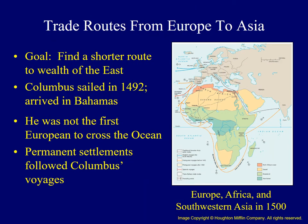Columbus was wrong when he believed he had found a quicker route to Asia, and he was not the first European to successfully cross the Atlantic. However, his actions were very important. His voyages were sponsored by the Spanish crown and caught the attention of other European rulers. His actions were then followed with large-scale efforts to explore the region more deeply and to establish permanent settlements.